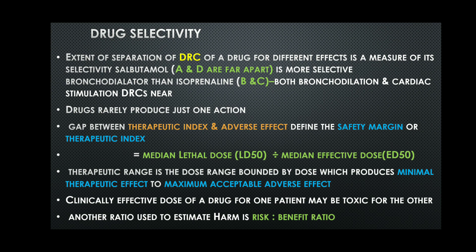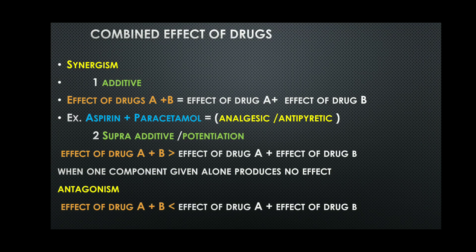Another ratio used to estimate harm is the risk-to-benefit ratio. Every drug has a risk-to-benefit ratio. We evaluate this ratio to ensure that the benefits of the drug are greater than its risk factors — that is why we administer drugs, so that the benefits outweigh the side effects.